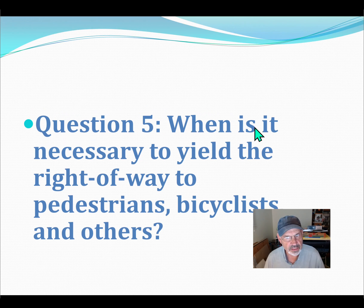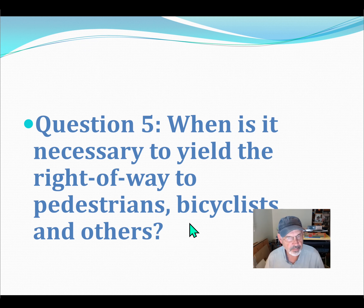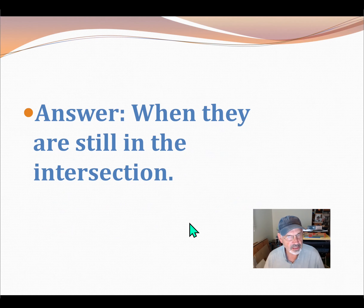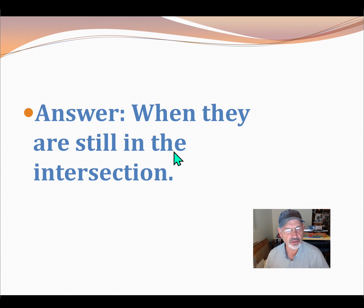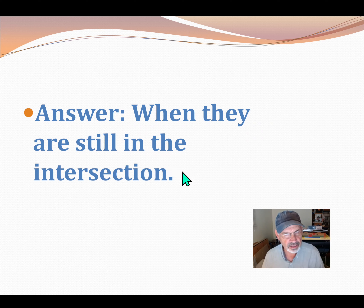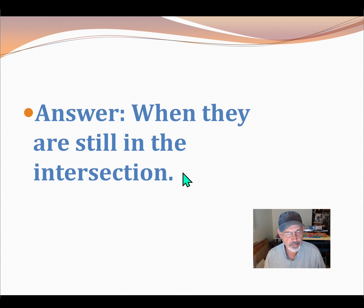Question 5: When is it necessary to yield the right of way to pedestrians, bicyclists, and others? Answer: When they are still in the intersection. It's not just when they are still in the intersection — when they are standing at the corner, at a crosswalk or any corner, you need to stop and allow them to proceed.